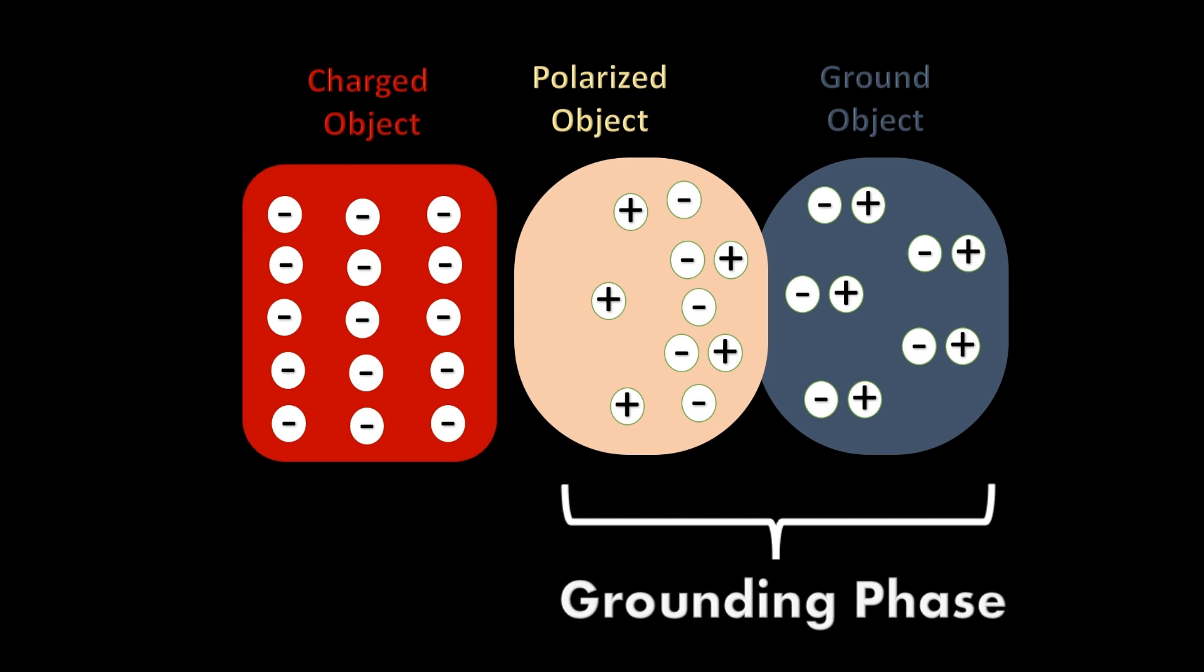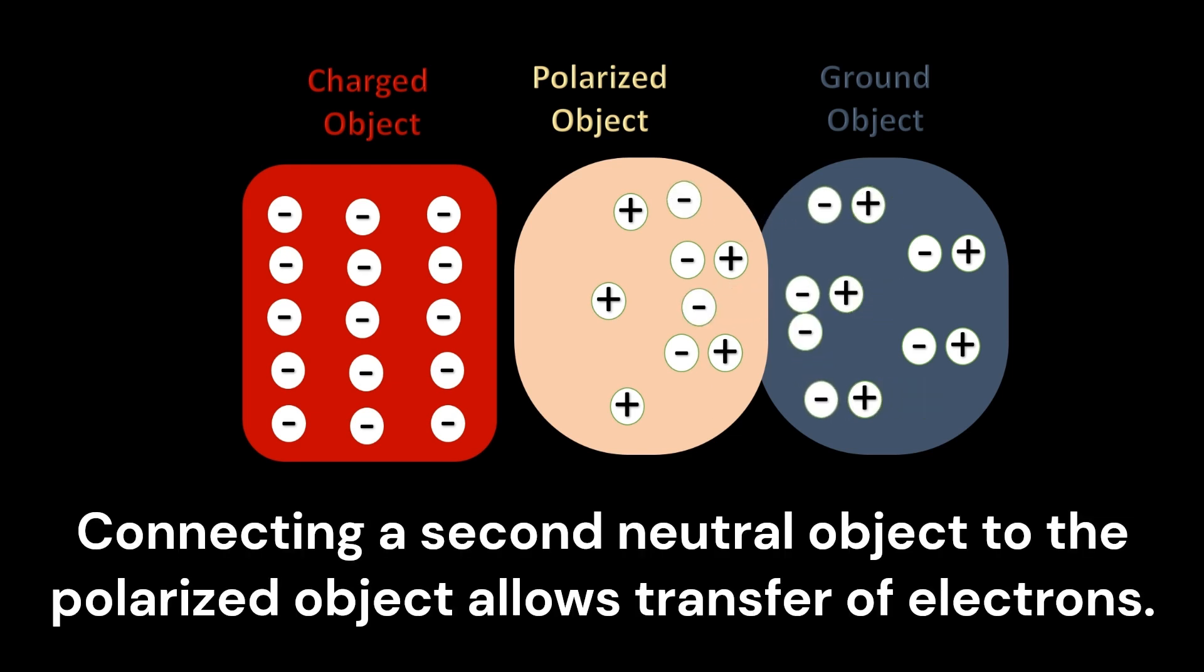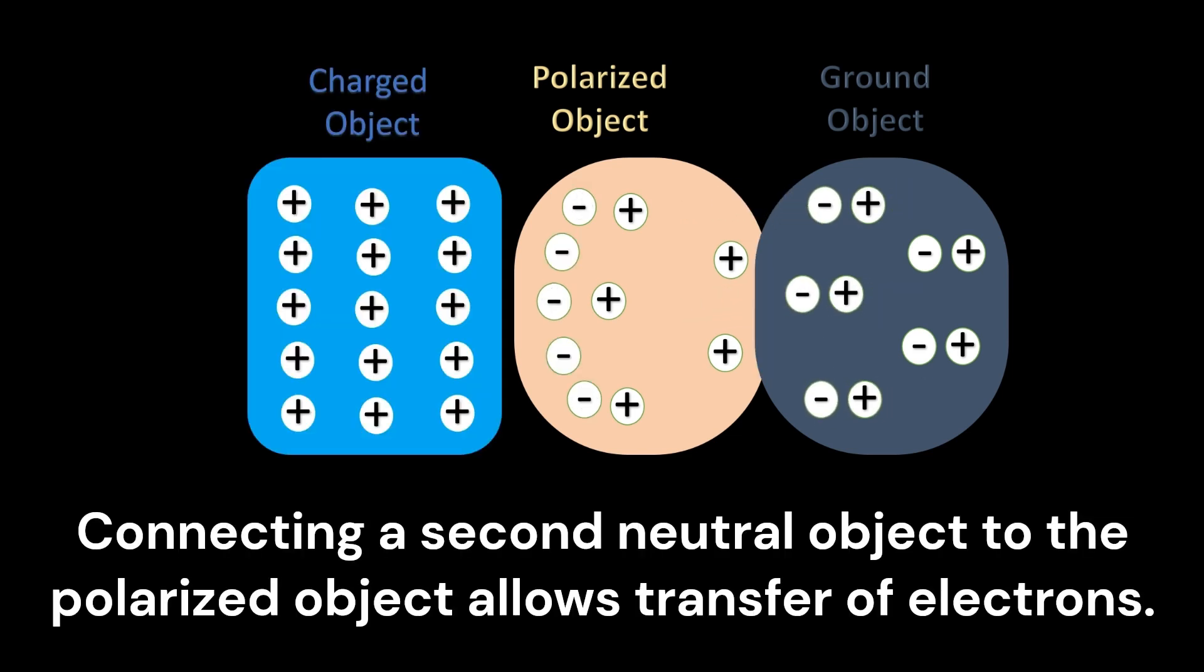Grounding involves connecting the polarized object to the Earth or a large conducting body. This connection allows electrons to flow to or from the second neutral object, stabilizing the charge on the polarized object.